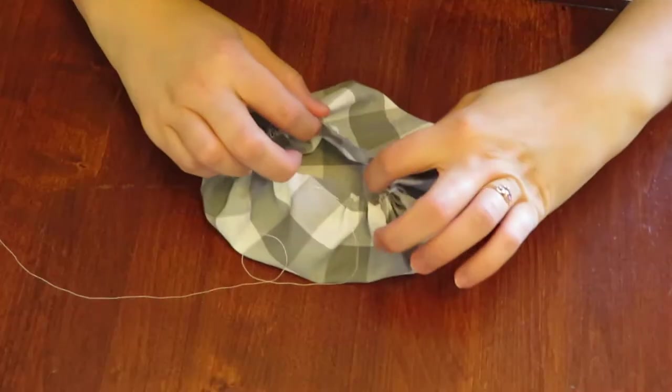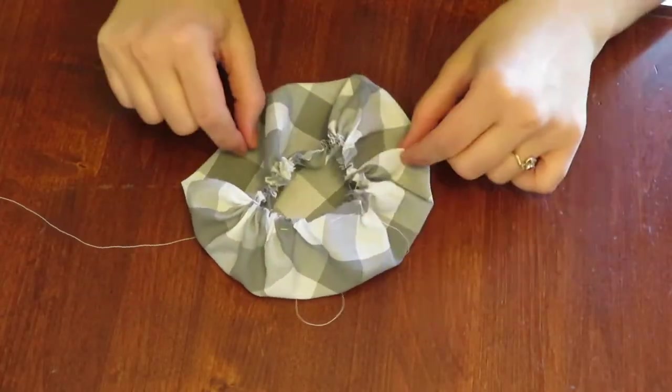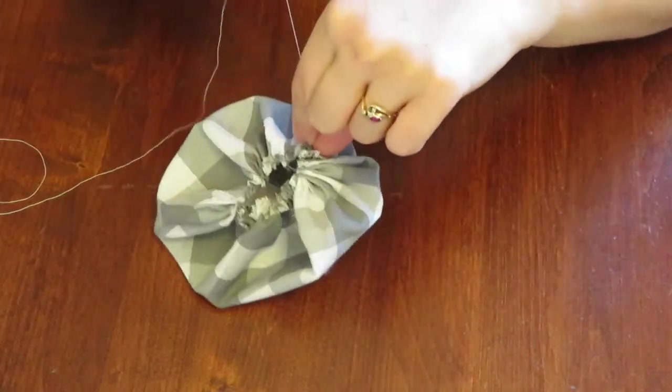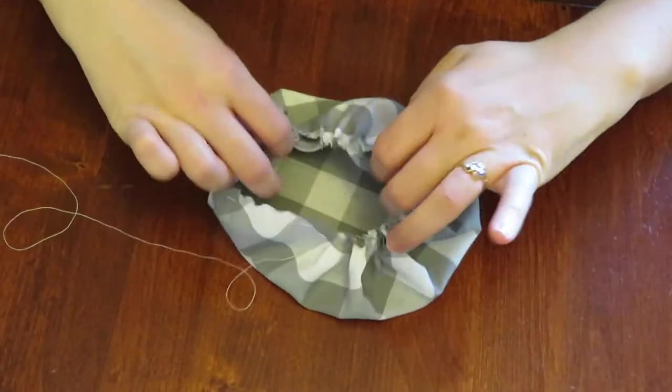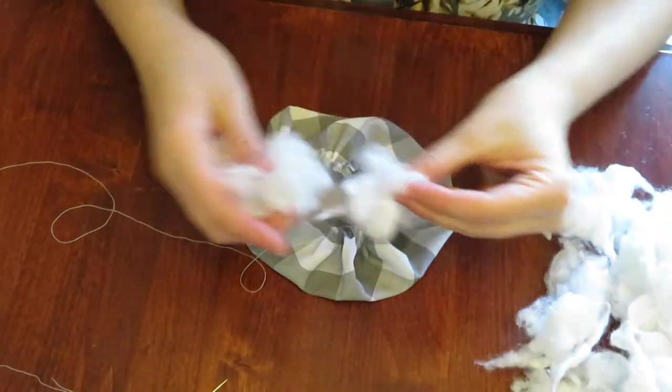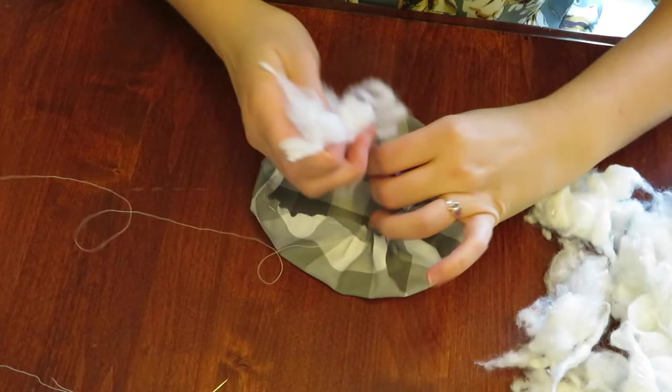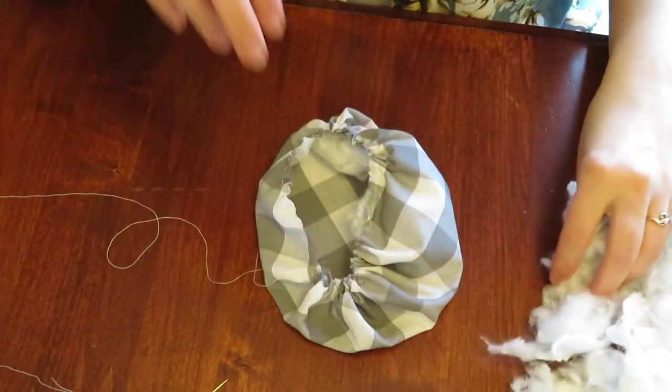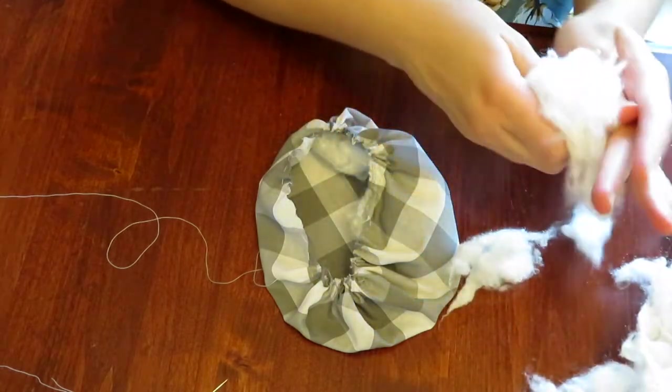So I finished the running stitch all the way around as you can see here. And then now I can just squeeze, cinch it shut. But I want to fill it first. I'm going to open it up a little here. And then whenever I do use my polyfill from my pillow I usually shred it up really good because it gets really matted in there. So I always try to shred it and make it poofy. And what I've learned doing these, you want to make sure you go around the edges and get that all full and then kind of start shoving in the middle.